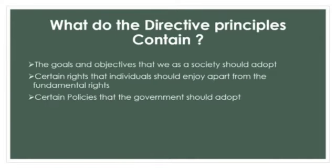The constitution makers mentioned three main features in the Directive Principles. First, the goals and objectives that we as a society should adopt — a few features are given to create or make a good society. Second, certain rights that individuals should enjoy apart from the fundamental rights, meaning individuals should follow certain rules and regulations that will create enjoyment for others as well. Third, certain policies that the government should adopt — while framing or making laws and policies, the government should keep these suggestions in mind.